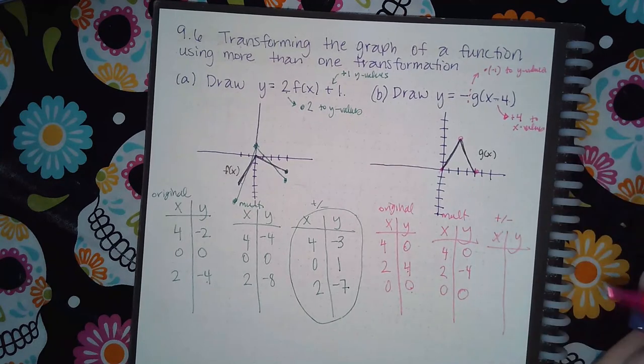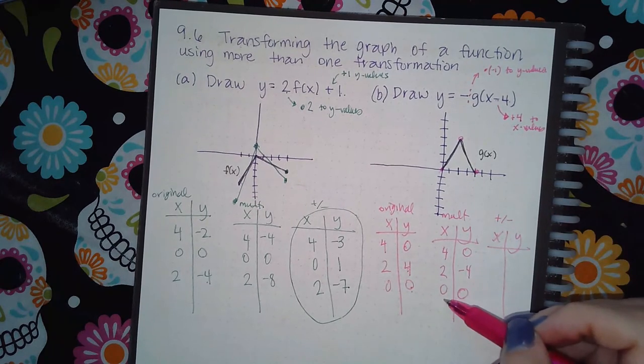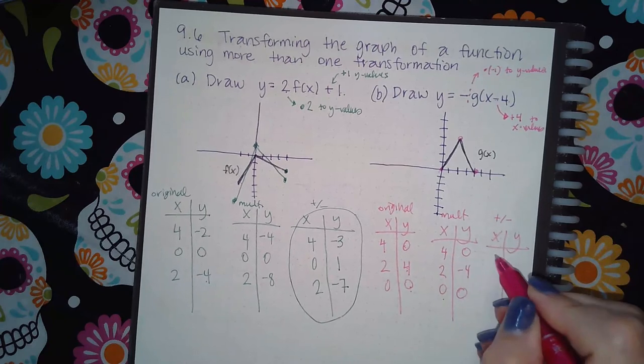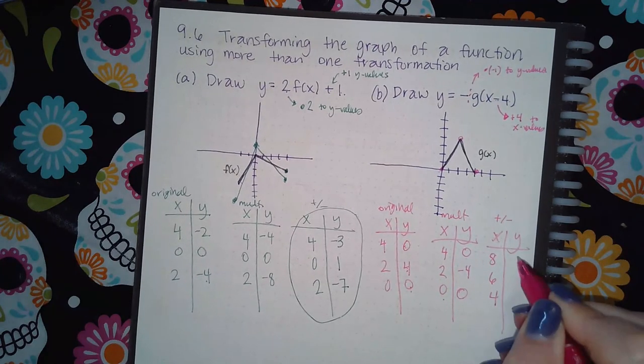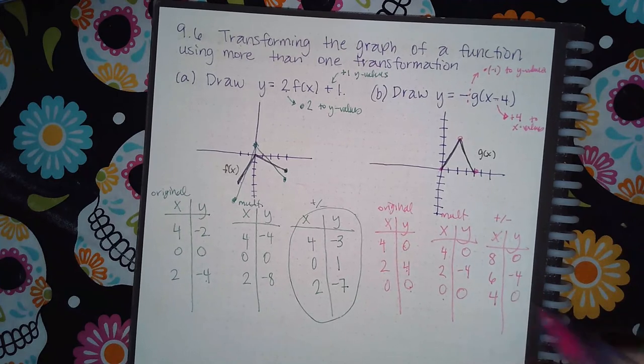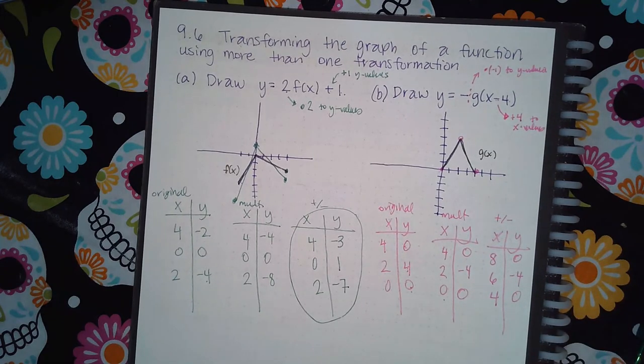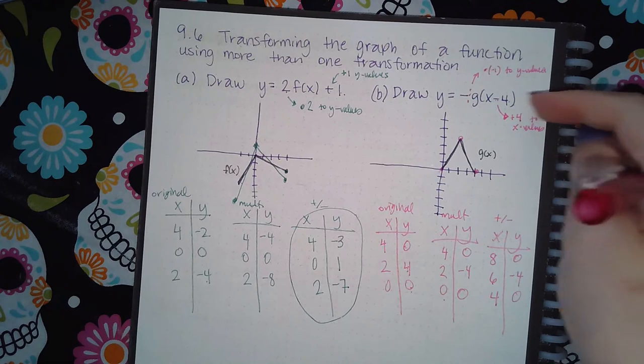So I'm going to take each one of these x values, and I'm going to add four. So I end up getting eight, six, and four. And the y values are not changing here at all, because there was nothing being added or subtracted outside the basic function.